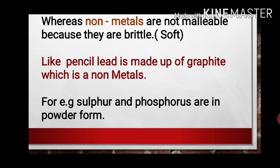So malleability tells us that metals are malleable and non-metals are non-malleable. For example, pencil lead is made of graphite, and with a little pressure it can be crushed easily — that is because graphite is a non-metal and does not have the property of malleability. Similarly, sulfur and phosphorus are available in powder form. Since they are already in powder form, it is impossible to convert them into thin sheets, confirming that non-metals are non-malleable.